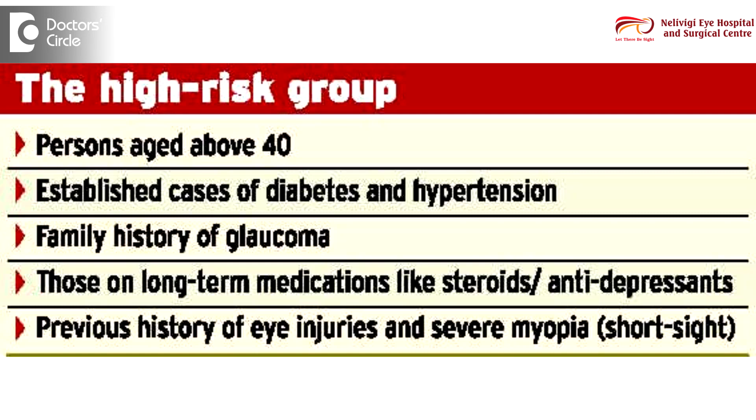Conditions like uveitis, which is an inflammatory condition of the eye, can cause glaucoma. So glaucoma can be classified based on its type — such as open angle and closed angle glaucoma — or based on its causation, such as traumatic glaucoma or cataract-induced glaucoma.